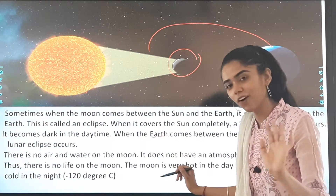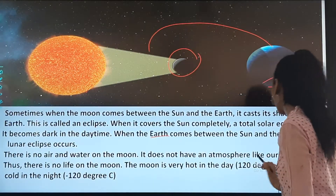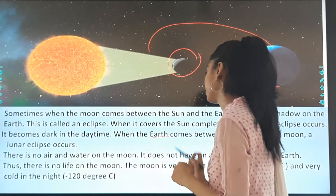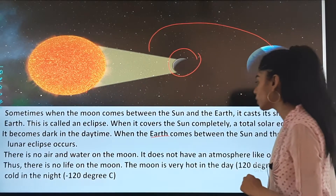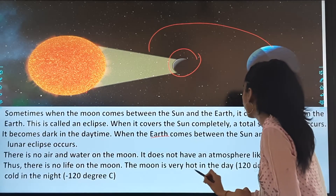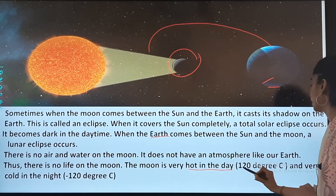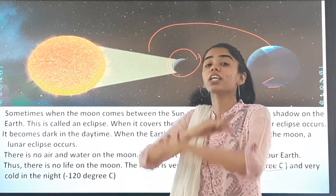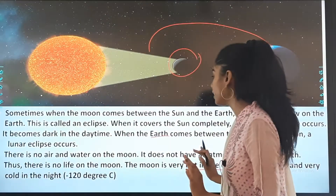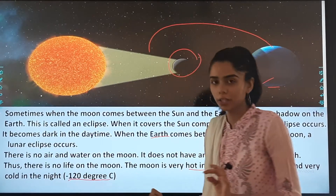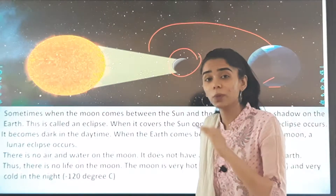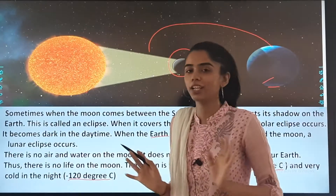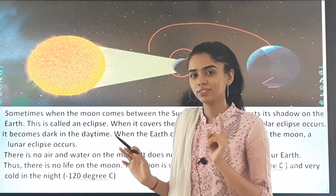There is no air and water on the moon. It does not have an atmosphere like our earth, which is why there is no life on the moon. It is very hot in the daytime — 120 degrees Celsius — and during the night time it is very, very cold, minus 120 degrees Celsius.